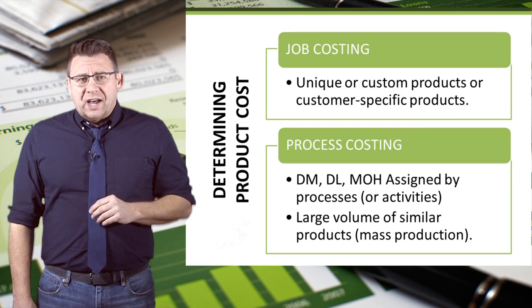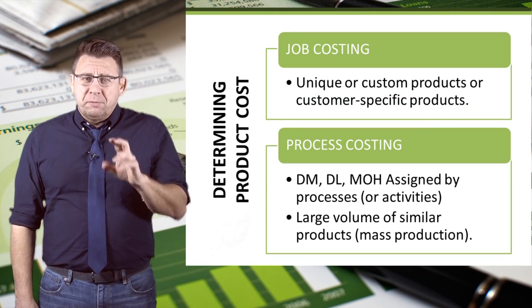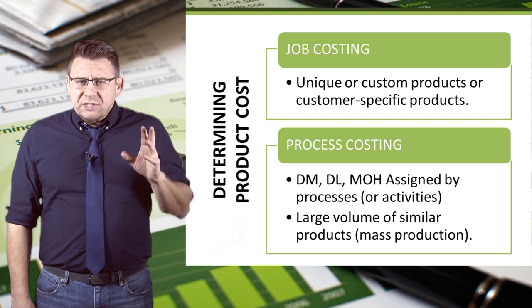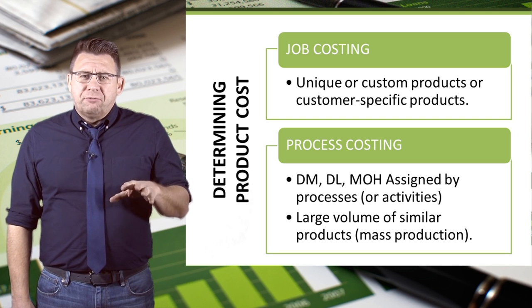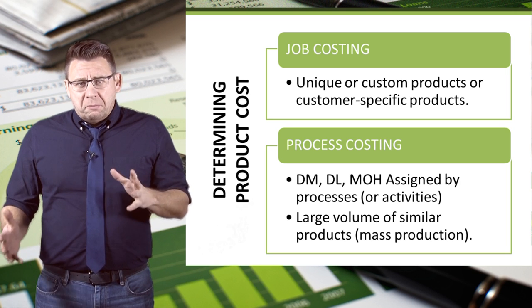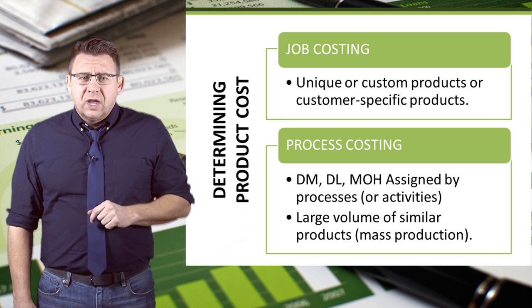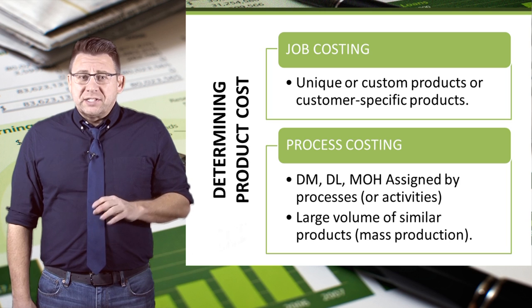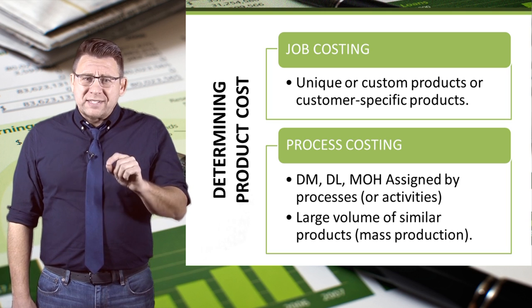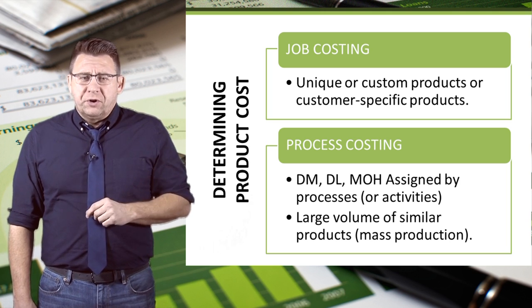Process costing is used when a large volume of similar products are manufactured. Costs are accumulated for a period of time — a week or a month — rather than for a set job. Costs are assigned to departments or processes for this specific period of time.